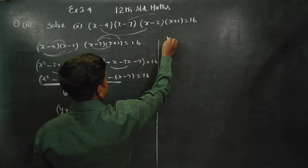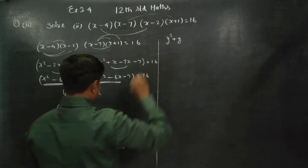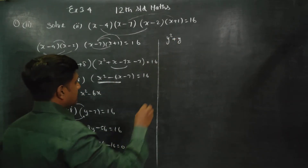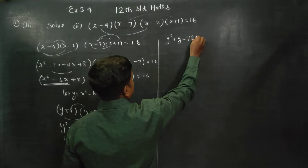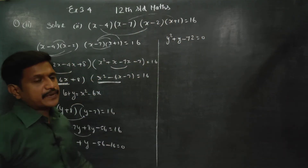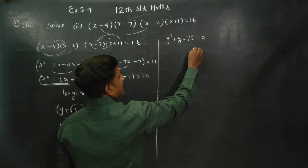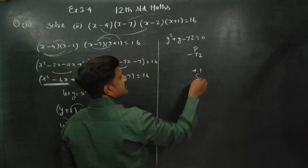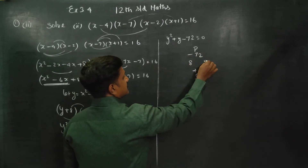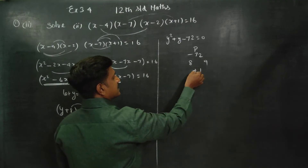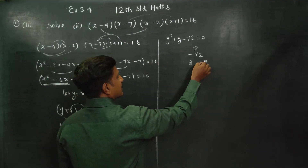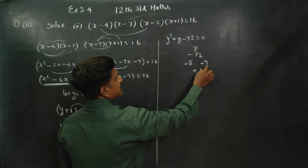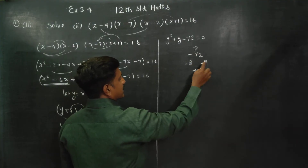y squared plus y minus 96 minus 14 minus 72 is equal to 0. Now, product sum: minus 72 plus 1 equals 8. 9 eights are 72. Plus is equal to minus. Minus 8, 9 is equal to 1.